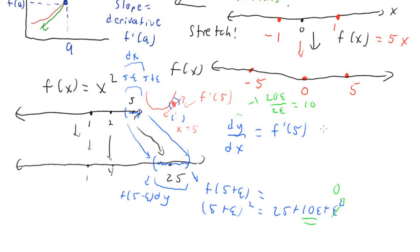So dy over dx is 20 epsilon over 2 epsilon, which is 10. This is saying that f prime of 5 is 10. And we know that the derivative of x squared is 2x, so we can check that indeed if f of x is x squared, f prime of 5 is 10. So this actually gives us the correct answer for the derivative. This is how we can think about derivatives — instead of the slope of the line, we think about how much it dilates around some point.